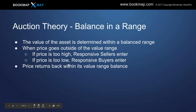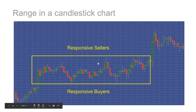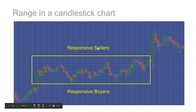Now let's get into more about auction theory and balance within a range. The value of the asset is determined within a balance range. When price goes outside of that range value, if it's too high, you find responsive sellers; if price goes too low, you find responsive buyers, and price returns back into its value range balance. On a candlestick chart, this is classic auction theory — responsive sellers at the top, responsive buyers at the bottom, with a lot of wicks showing buying and selling at the extent of the ranges.